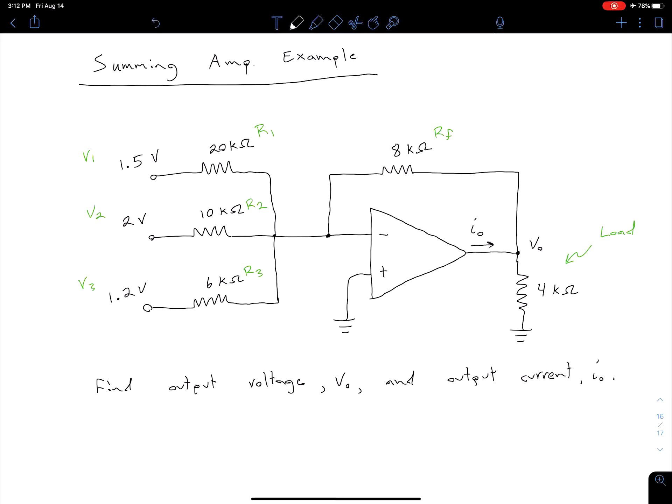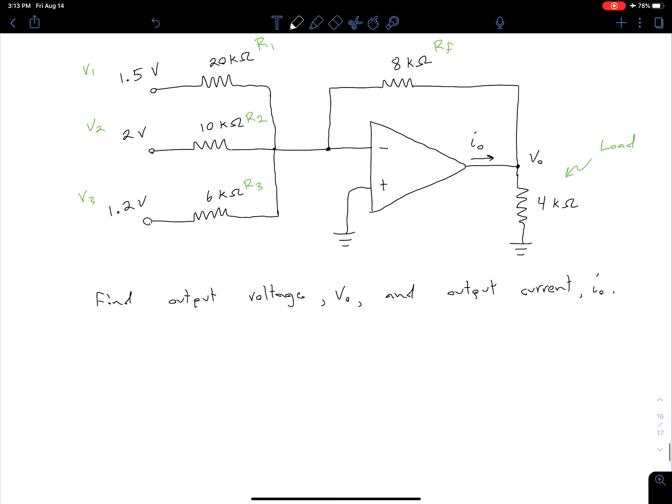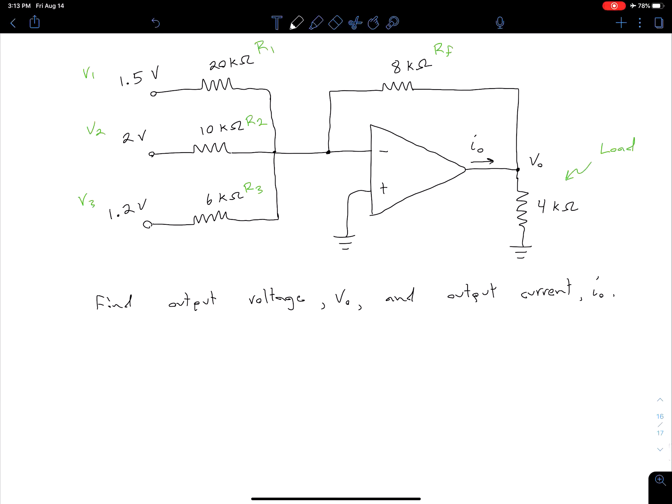Components of things like motors could also be modeled as resistors, although like you've maybe seen in previous classes or we'll see in later classes, we'll also have inductive components to consider when we have motors. But at any rate, for now we're just going to say that's a 4 kΩ load resistor. All we have to do is we know this is a summing amp configuration, so we just plug these values into that equation we found last time.